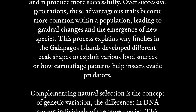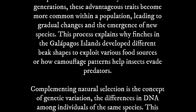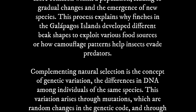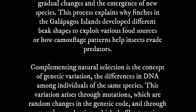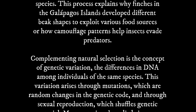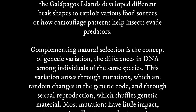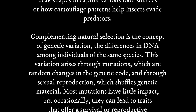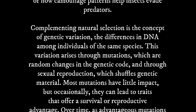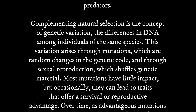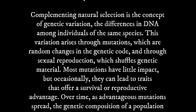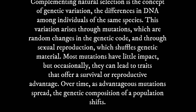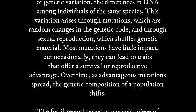Complementing natural selection is the concept of genetic variation — the differences in DNA among individuals of the same species. This variation arises through mutations, which are random changes in the genetic code, and through sexual reproduction, which shuffles genetic material. Most mutations have little impact, but occasionally they can lead to traits that offer a survival or reproductive advantage.